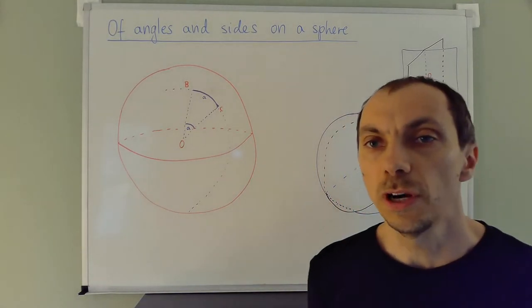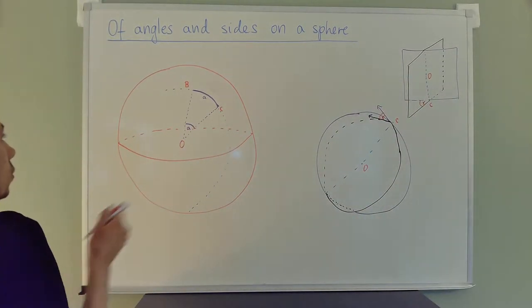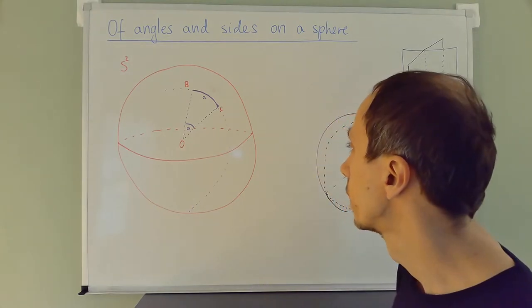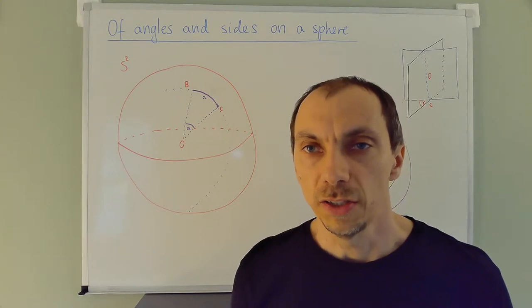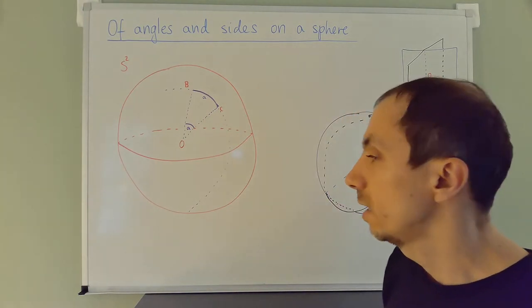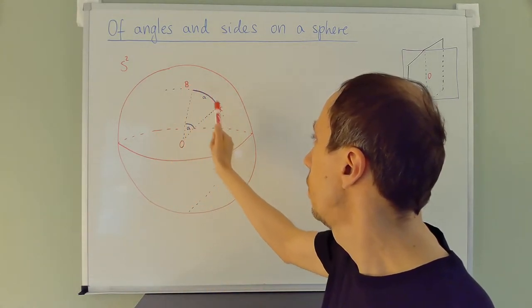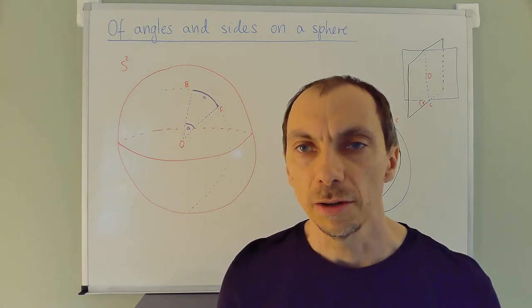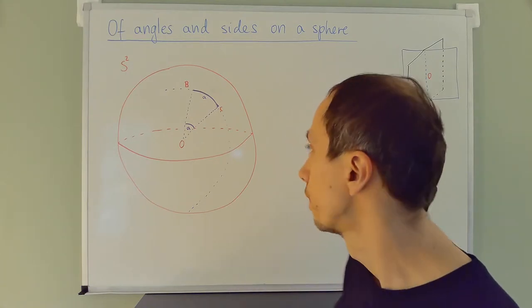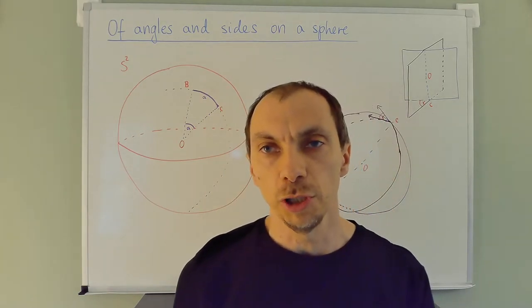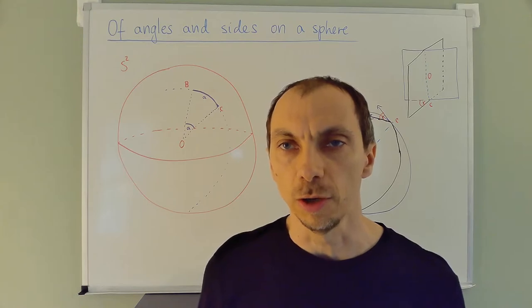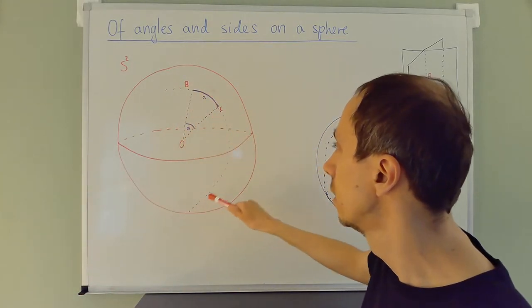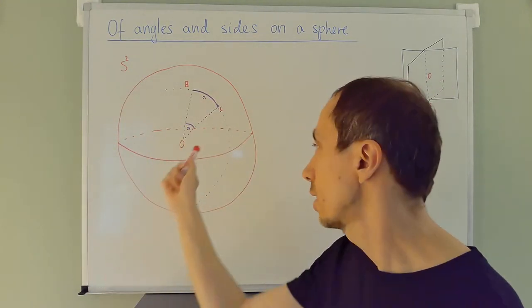Here you see a sphere — for us it's always a unit sphere, so the radius is one, this is S², and the center of the sphere is denoted by O. A side or line segment on the surface of a sphere is a geodesic joining two points on the sphere. I denote these two points by B and C, and the geodesic joining two points is part of a great circle through those two points. The center of that great circle is the center of the sphere.